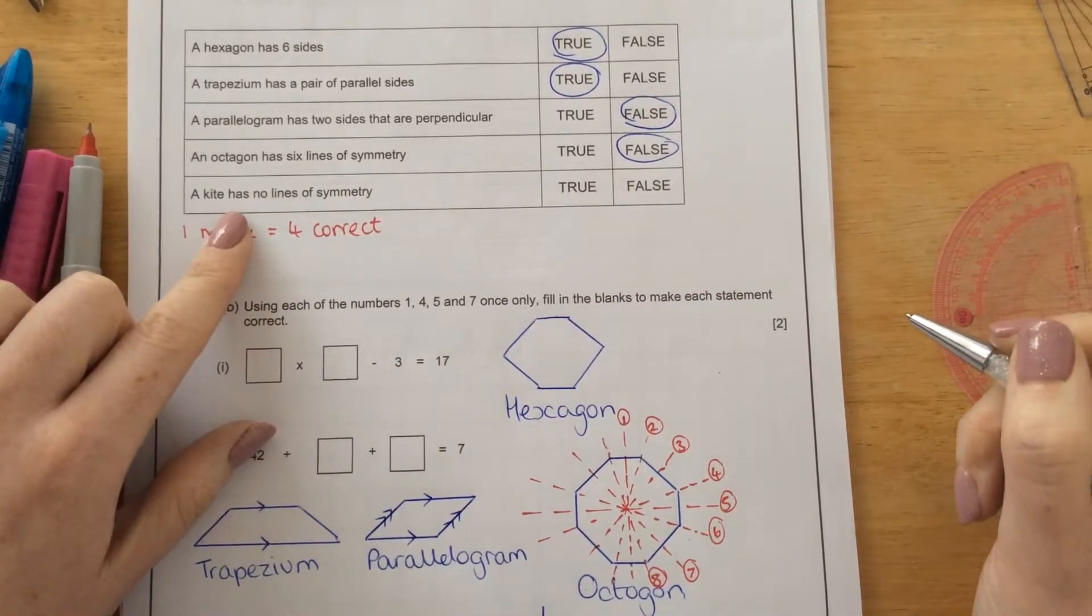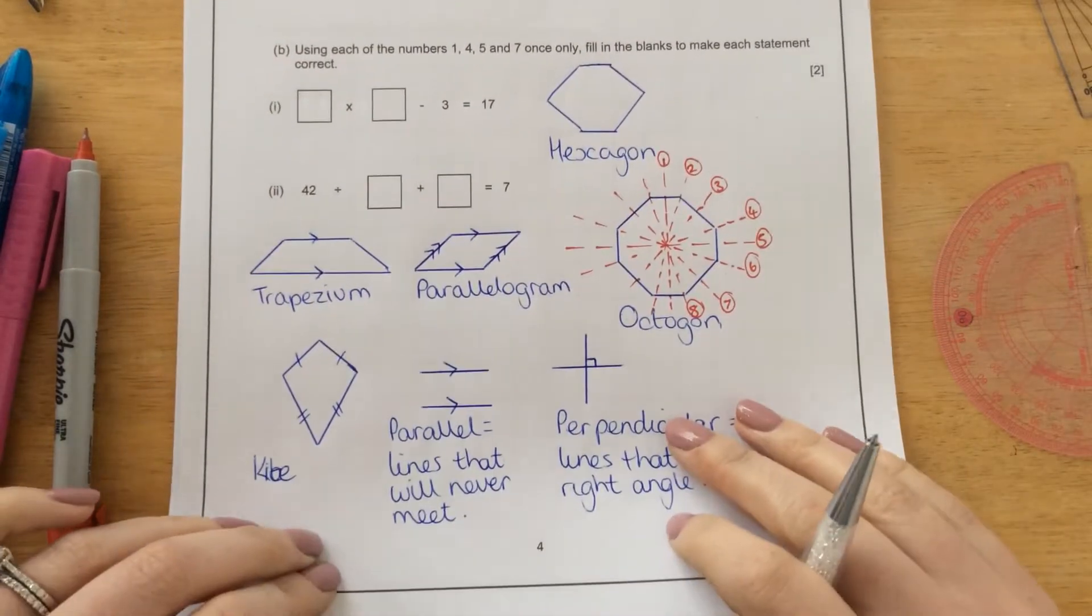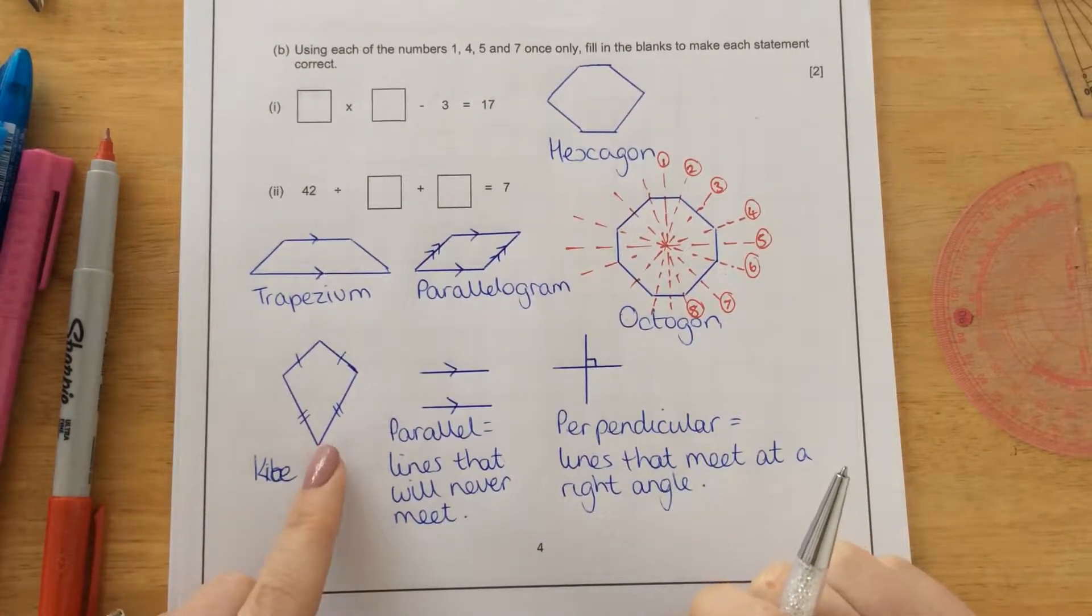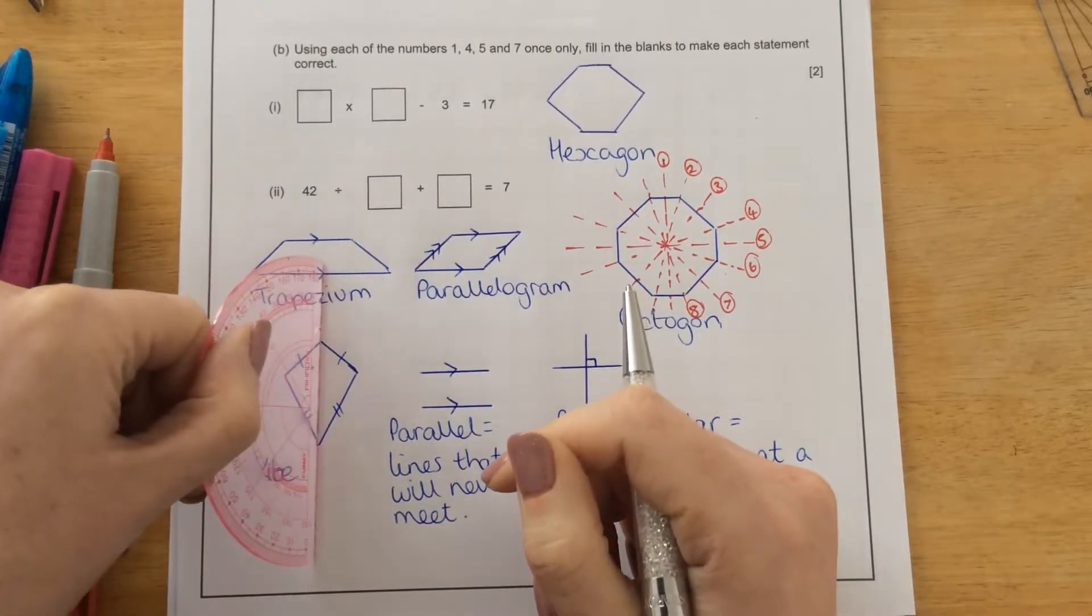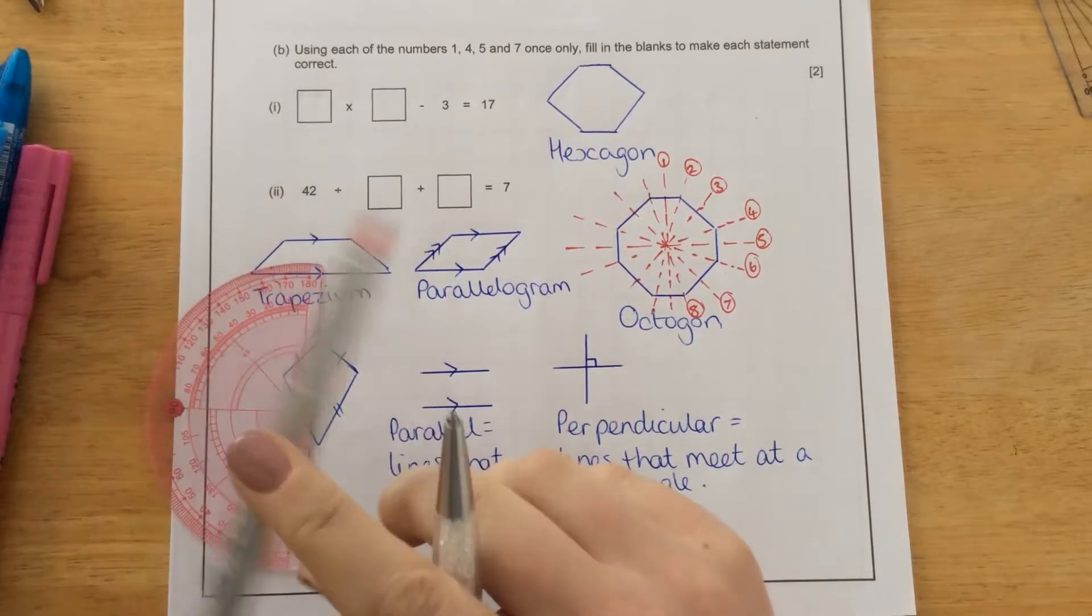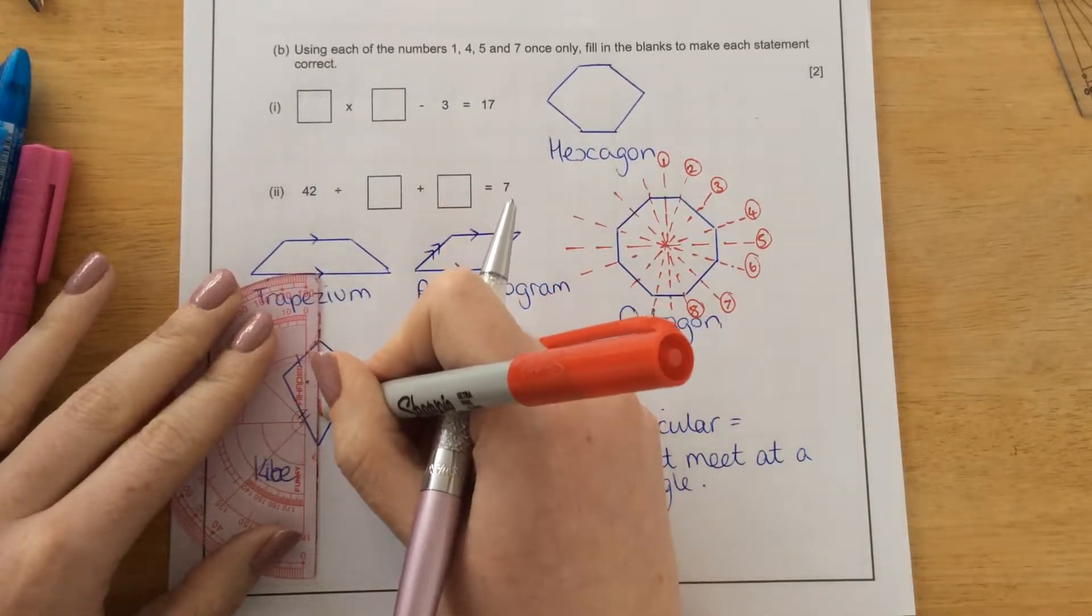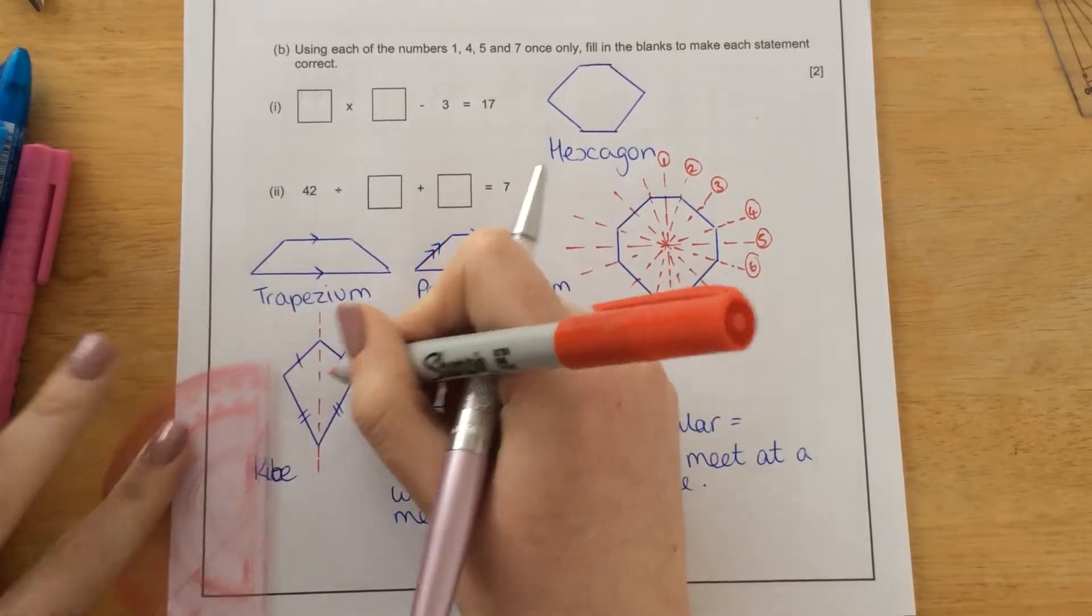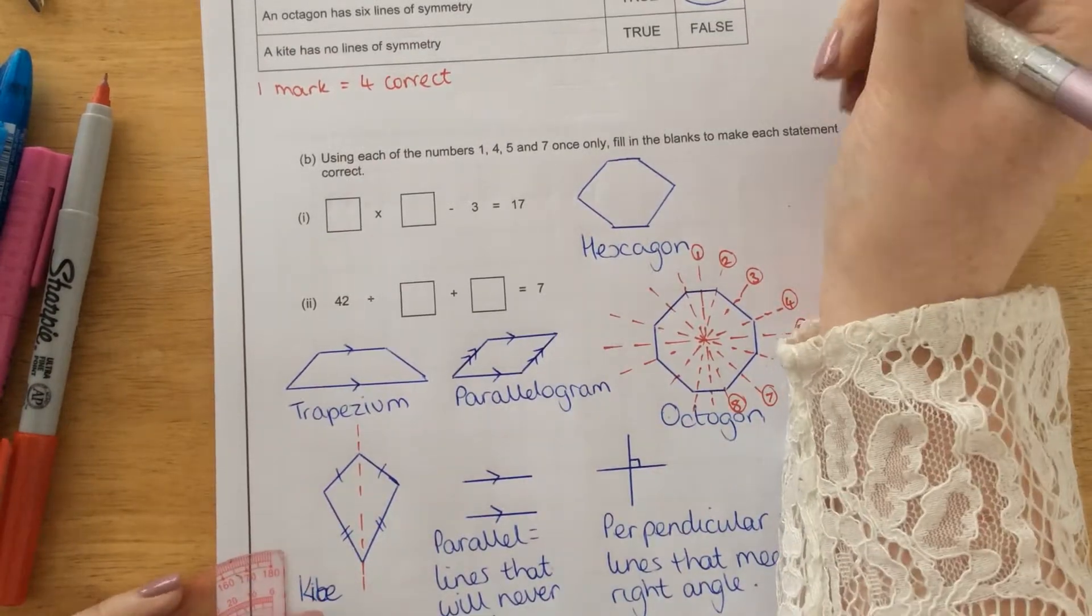A kite has no lines of symmetry. A kite looks like this here. And as you can see, that's false because if I put a line straight down the middle of that shape, then this side would be identical to the other side. So that is also false.